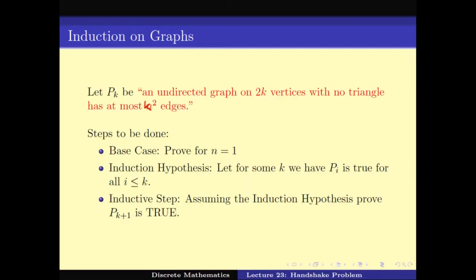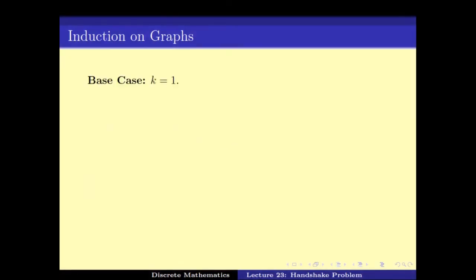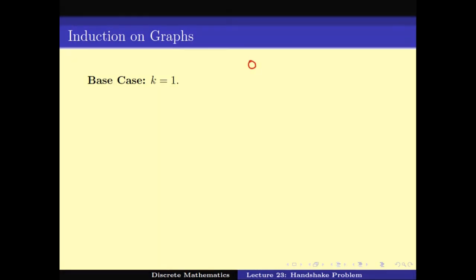Using this induction, we will try to solve the inductive step. We start with the base case. Can we prove base case k equals 1? If k equals 1, then the graph has two vertices. Either they can have 1 edge or 0 edges, so the number of edges is less than or equal to 1, which equals k². So P(1) is true.